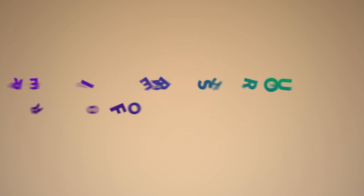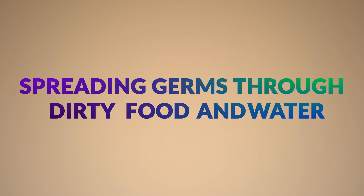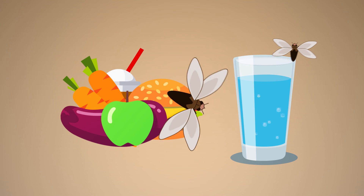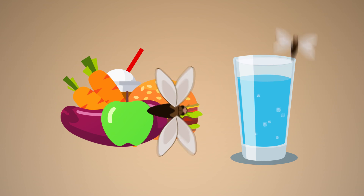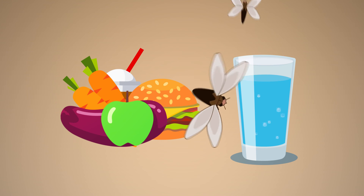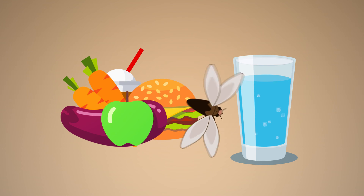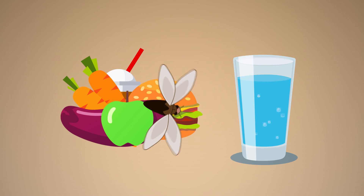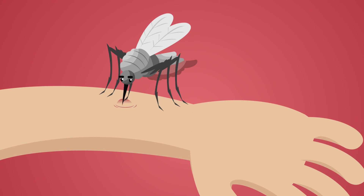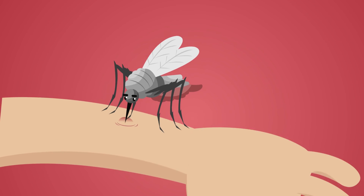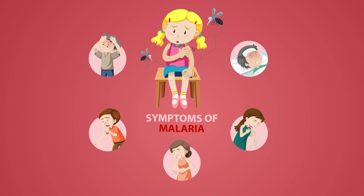Number two: spreading germs through uncovered food and water. Uncovered food and water attract flies. When flies sit on them, they transfer germs onto the food and water, which are later consumed by healthy people. Number three: spreading germs through insects. Mosquitoes and other insects can transmit diseases through bites — for example, a healthy person bitten by a mosquito carrying malaria can be affected.